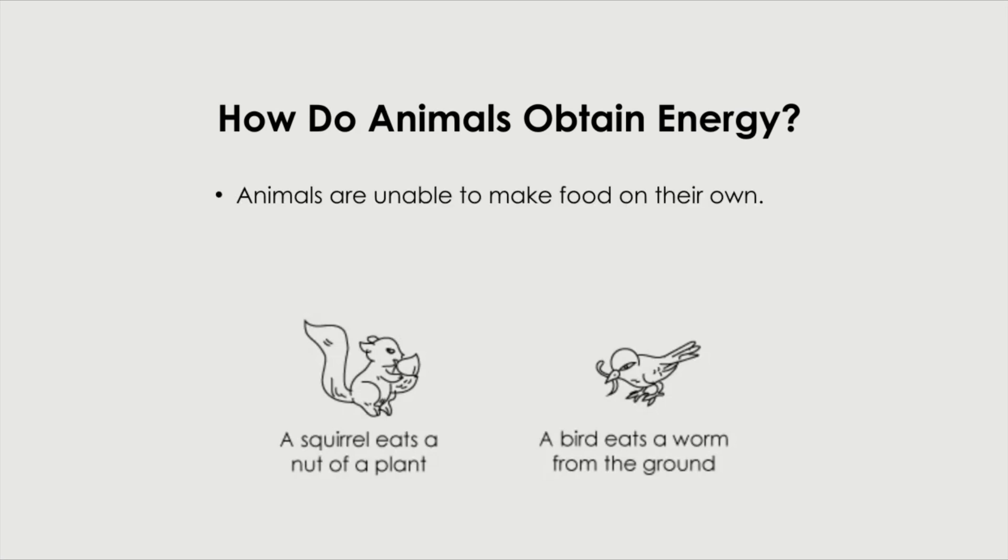How do animals obtain energy? Animals can't make their own food, so they need to get their energy by eating other plants or other animals. A squirrel eats a nut, a bird eats a worm.